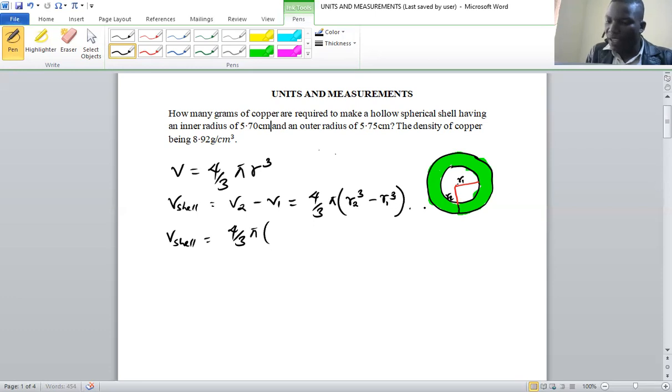The outer part is our r two, which is 5.75 cubic centimeters, and our inner radius is 5.7, so we cube that. So once we do that, we punch on the calculator.